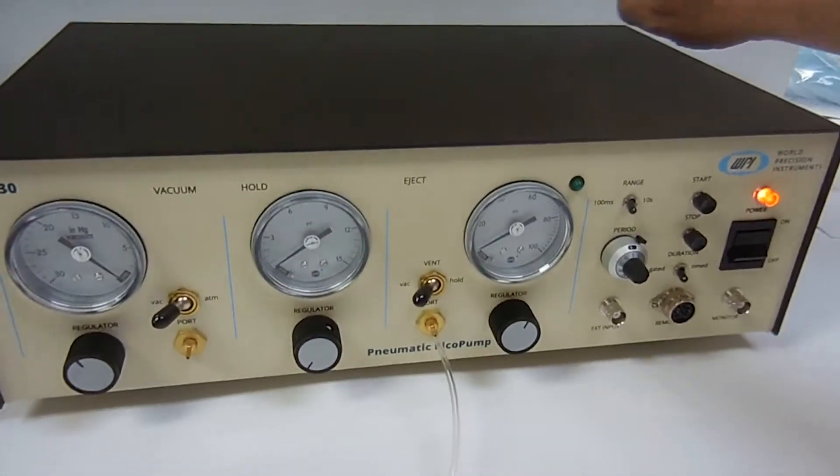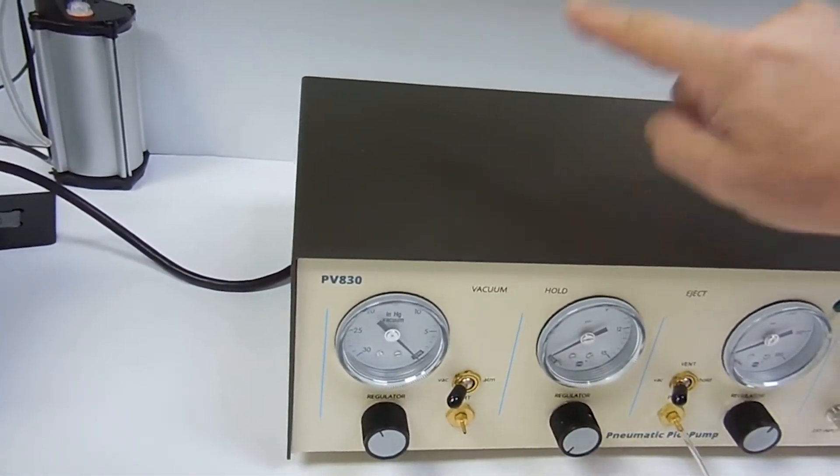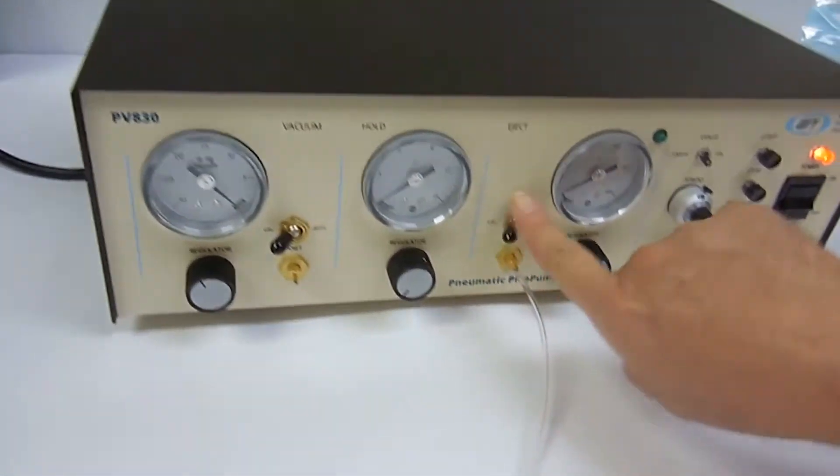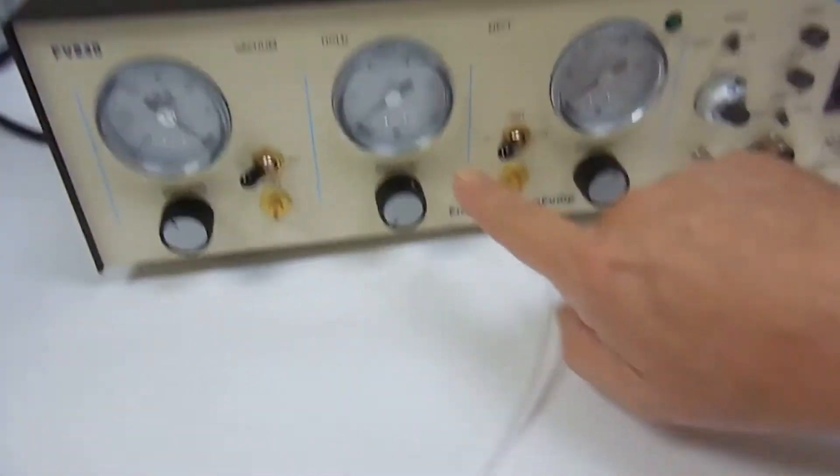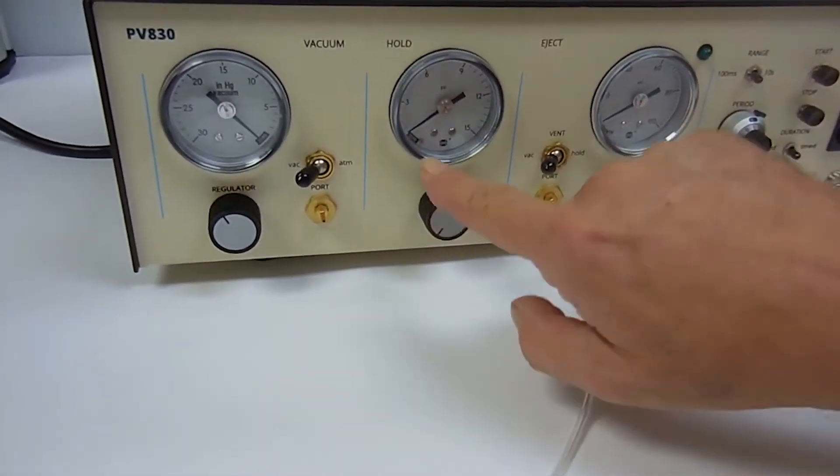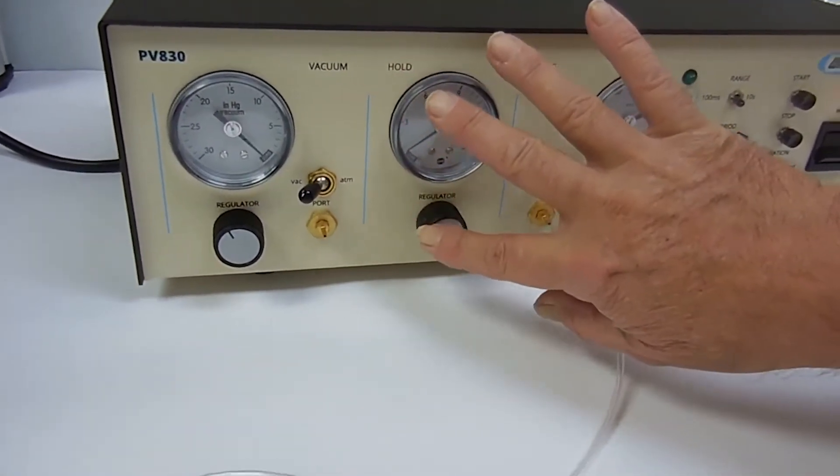Right now I've got 35 PSI coming in the back. I've got nothing connected to the vacuum source. I've got the vent switch in the vac position, there's a reason for this. I have a slight amount of pressure applied to hold but not enough to make a difference right now.